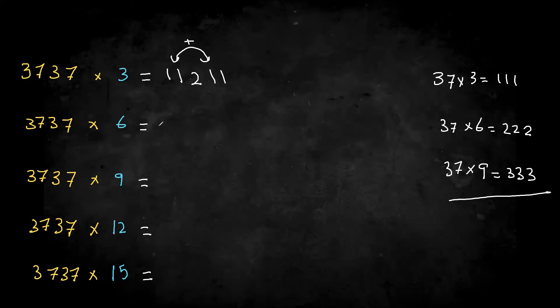So guess what? When we do this, we're going to get 2222, and then the number in the middle is going to be 2 plus 2, which is 4.